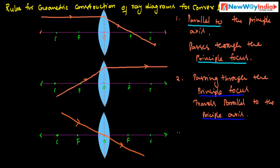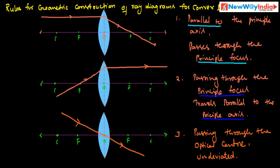To summarize the third rule: any ray of light passing through the optical center is undeviated and moves in the same direction. These are the three rules for constructing ray diagrams using a convex lens. Thank you.